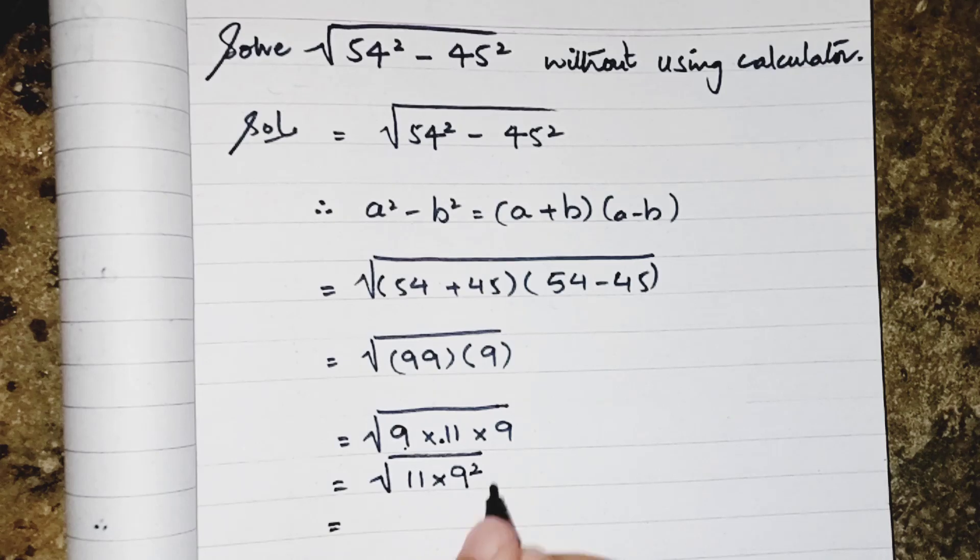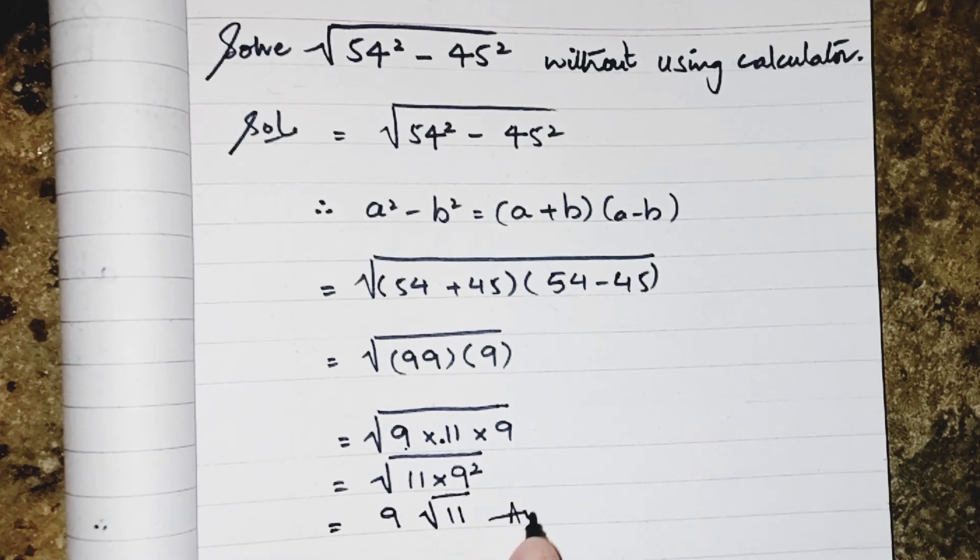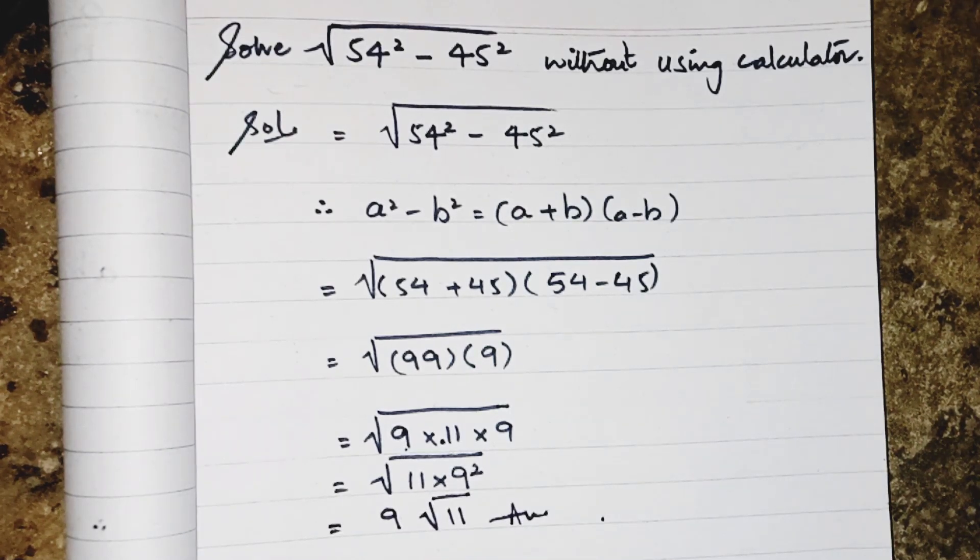And when we take the square of 9 inside the root, it will become outside the root, and 11 will still be inside the root. This will be my answer. Hope you like the video, so do subscribe to my channel. Take care, bye.